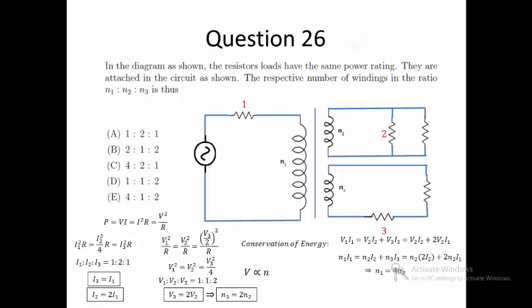Hence, combined with N3 equals 2N2, the ratio N1 to N2 to N3 is 4 to 1 to 2. The answer is then E.